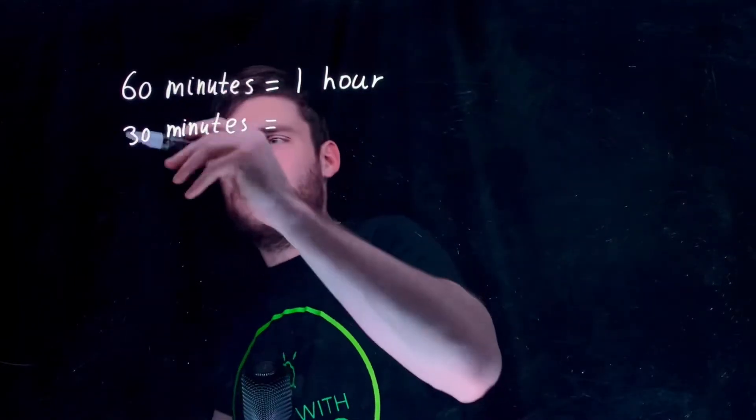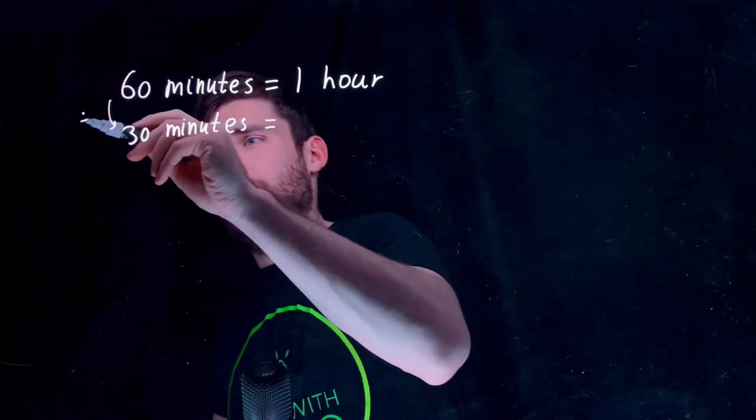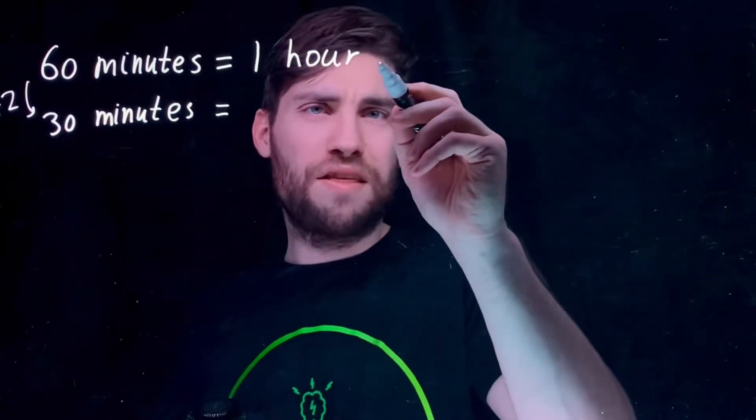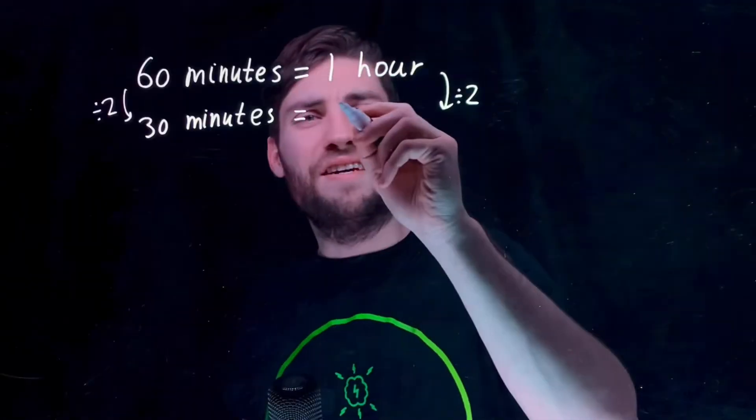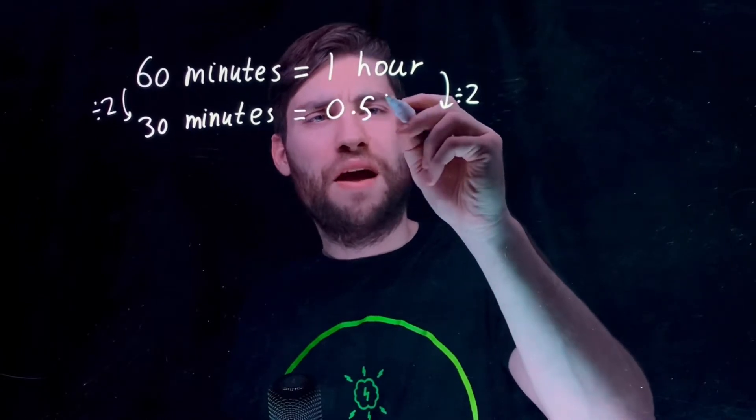Because we've halved 60 to 30, we divide that by 2, we then divide this by 2 and that is 0.5 hours.